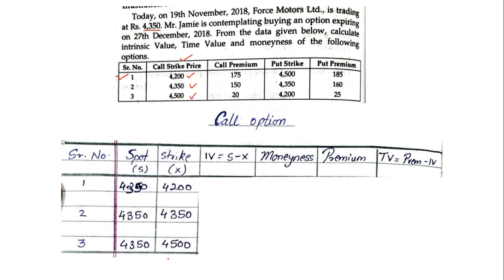Now for finding intrinsic value — this is the most important part. The intrinsic value formula is S minus X, that is spot price minus strike price. Under call option, when your spot price is more than your strike price you get a profit, and your intrinsic value is positive. When your spot and strike are both equal, the intrinsic value will be zero. When your spot is less than your strike it's a loss, but you cannot put a negative value — it will remain zero. Only positive values of IV are taken; everything else will be zero.